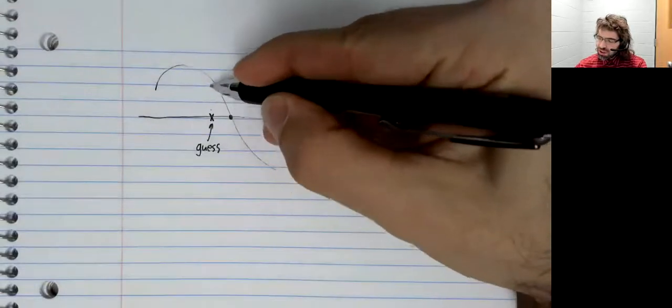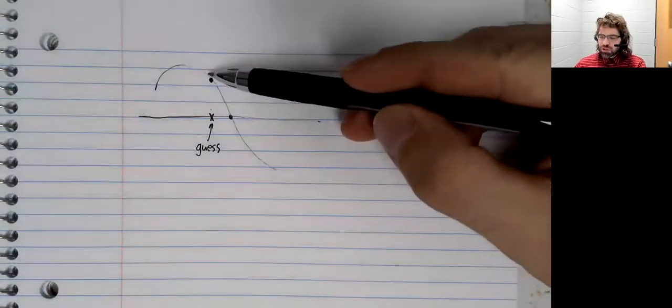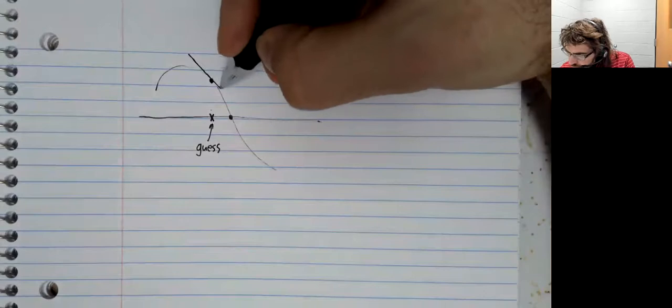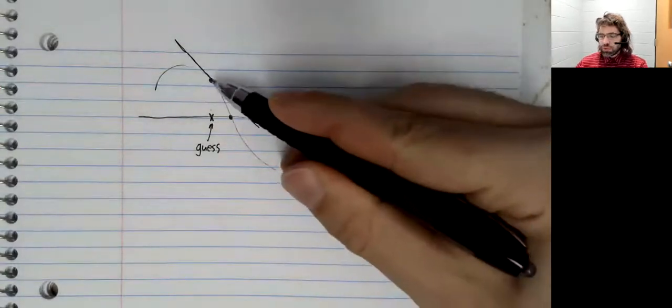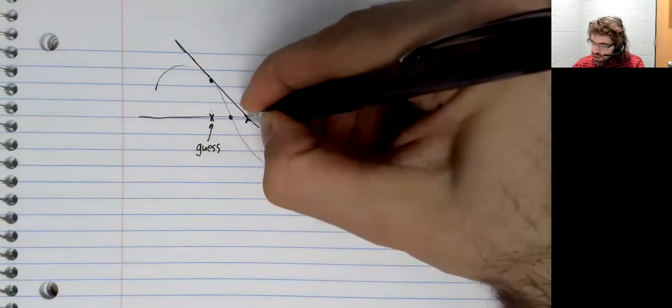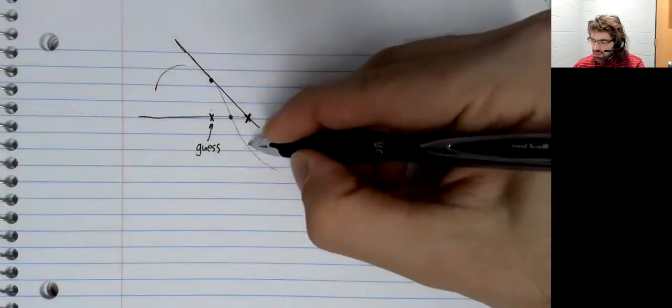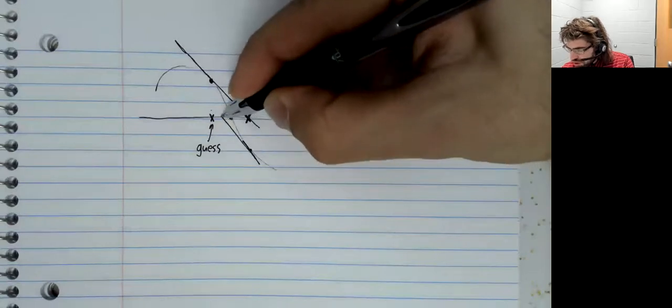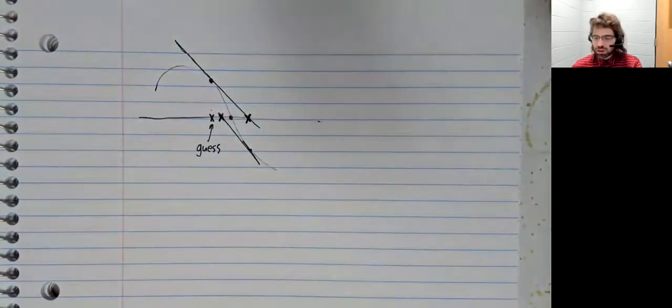This guess gives us a point on the curve and we can approximate the curve using this point and the idea of linearization. We then use this linearization to generate a new guess. Once we have the new guess, we go down here. We create another linearization. We use that to create a third guess.